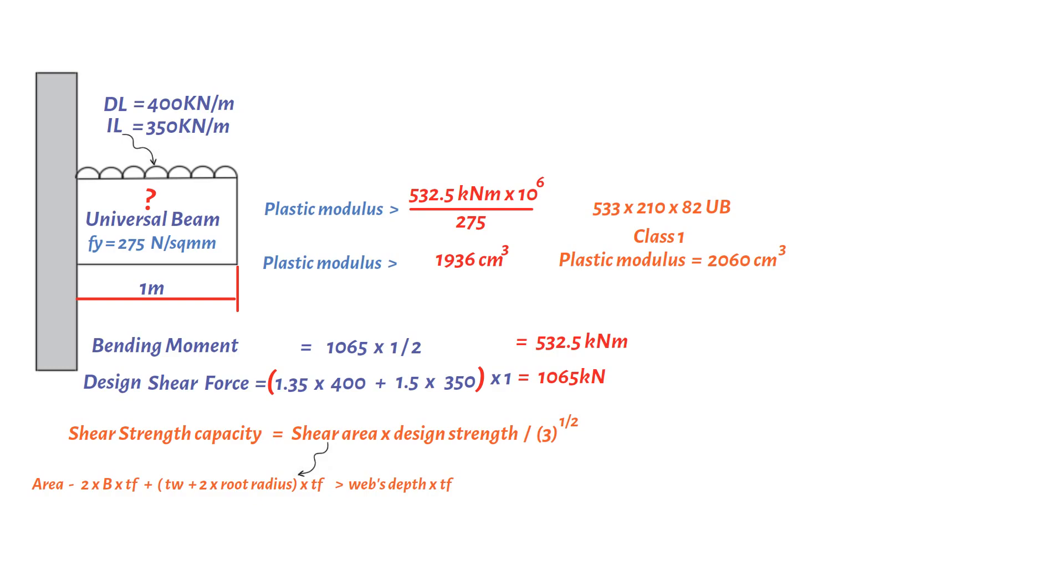Therefore, the shear area of a 533 by 210 by 82 UB section is 5400 square millimeters, and the shear strength capacity is 5400 times 275 divided by square root of 3. This gives 865 kilonewtons, which is less than the 1060 kilonewtons designed shear force. As a result, the section is unacceptable.